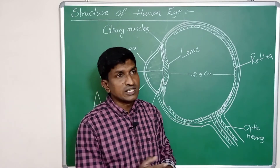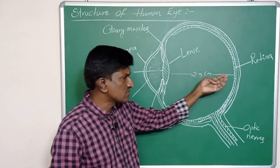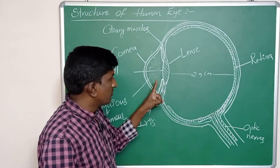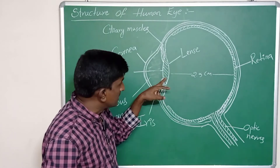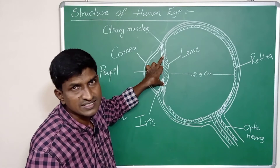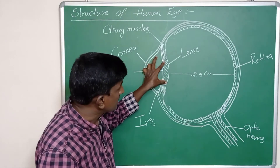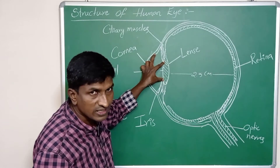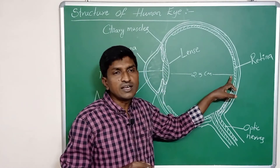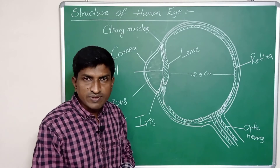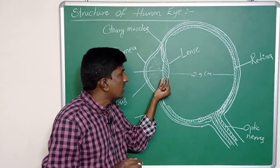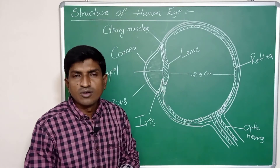The image is still formed on the retina at the same distance of 2.5 centimeters. But when observing closer objects, the focal length of the eye lens must change. For that, the ciliary muscles contract, causing the focal length of the eye lens to change accordingly.